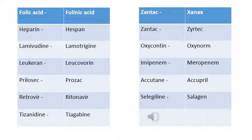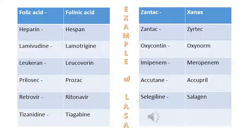Some other examples include: Diabeta and Zebeta, Folic Acid and Folinic Acid, Heparin and Hespan, Lamivudine and Lamotrigine, Leukeran and Leucovorin, Prilosec and Prozac, Retrovir and Ritonavir, Tizanidine and Tiagabine, Zantac and Zanex, Oxycontin and Oxyconorm, Imipenem and Meropenem, Accutane and Accupril, Selegiline and Selegene.